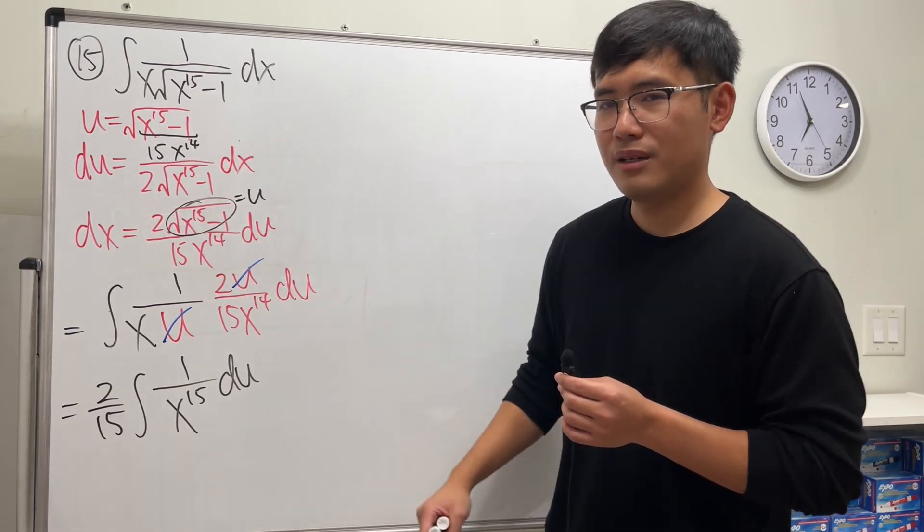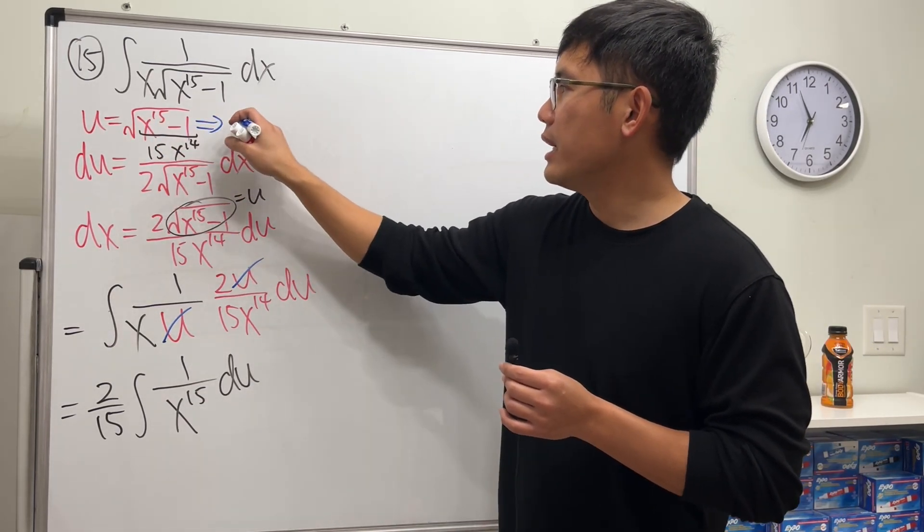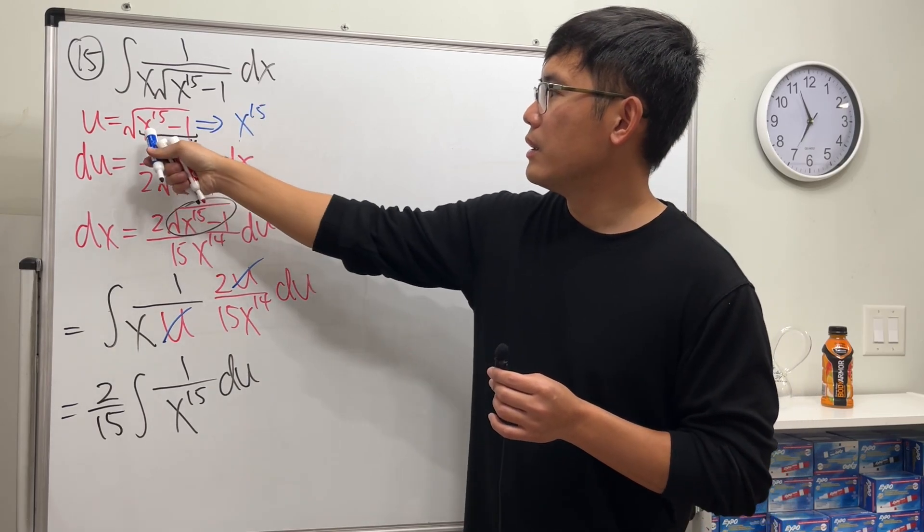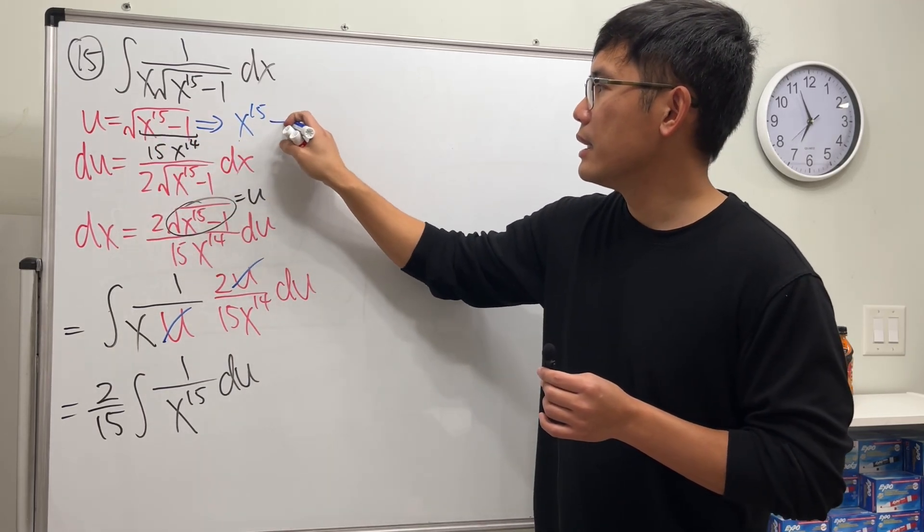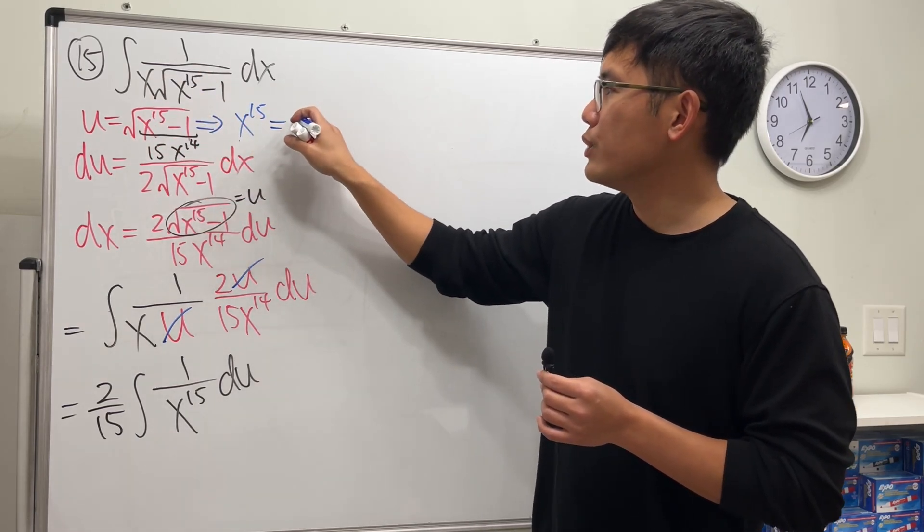And to do so, we look back here. We can square both sides, so we get x to the 15 minus 1 is equal to u square. Yeah, but put the minus 1 to the other side. We just get u square plus 1.